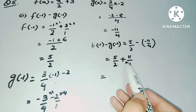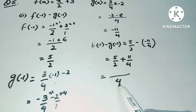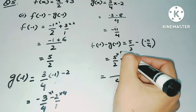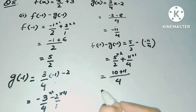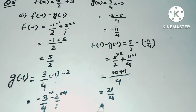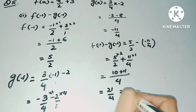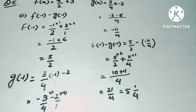Taking LCM of 2 and 4, which is 4: (10 + 11)/4 = 21/4. Since the numerator is greater than the denominator, convert to a mixed number: 21 ÷ 4 gives 5 remainder 1, so the answer is 5 whole 1/4. I hope that is clear.